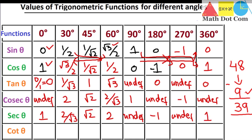Cot is the reciprocal of tan. So all the tan values will be inverted. Cot 0 is 1 divided by 0 — undefined. Cot 30 is root 3 over 1, which is root 3. Cot 45 is 1. Cot 60 is 1 over root 3. Cot 90: since tan 90 was undefined as 1 divided by 0, when we invert it we get 0 divided by 1, which is 0. Cot 180 is 1 divided by 0 — undefined. Cot 270: since tan 270 was minus 1 over 0, inverting gives 0, so cot 270 is 0. Cot 360 is 1 divided by 0 — undefined. Wherever undefined appears, it's either 1 by 0 or 0 by 0; if it's 1 by 0, inverting gives 0.